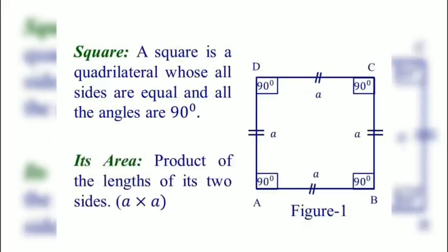A square is a quadrilateral whose all sides are equal and all the angles are 90 degrees. The product of two lengths of its sides is known as its area. So this is a square ABCD having side A units, and it has the area A square square units.